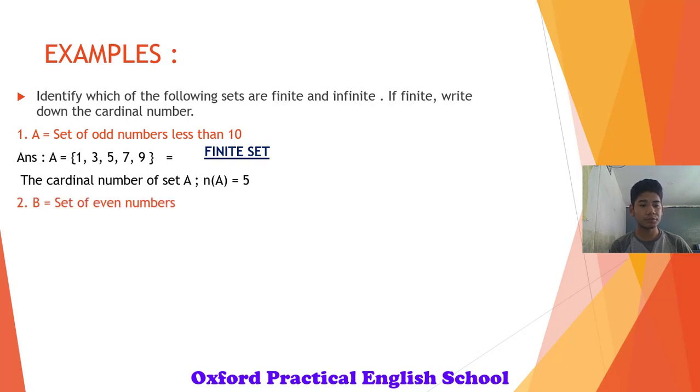Number 2, set B, set of even numbers. They are 2, 4, 6, 8 and so on. Can we count them all? No. So it is an infinite set. And the cardinal number is infinite.